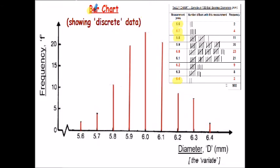What's shown below is the bar chart data from the tally chart. At the moment it looks like we cannot have, say, a 5.75 diameter ball bearing or a 5.8215. So we're going to take this bar chart information and turn it into a histogram. I'm plotting my bar chart - each bar represents the frequencies from the table. So 5.6 we have two items, 5.7 we have four, 5.8 we have 11, and so it goes on. I've got frequency on the vertical axis and diameter d in millimeters on the horizontal axis.